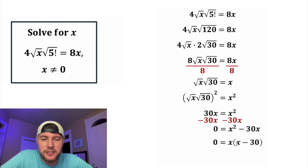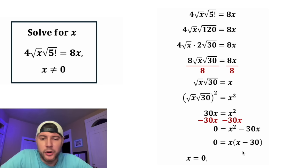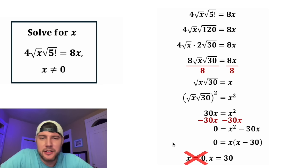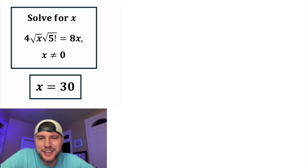So this is the same thing as this. Anytime you have two things multiplied to give you 0, it'll be true if either one of them is equal to 0. That means either x is equal to 0 or x is equal to 30. And way up here it says x can't equal 0, so we can discard this solution. So the answer to our question is x equals 30. Let's put a box around it. How exciting.